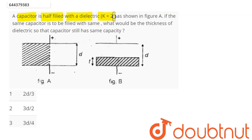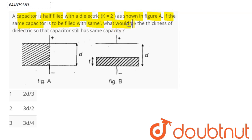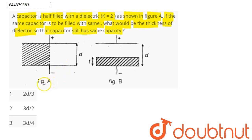If the same capacitor is to be filled with the same dielectric, what would be the thickness of the dielectric so that the capacitor still has the same capacitance?